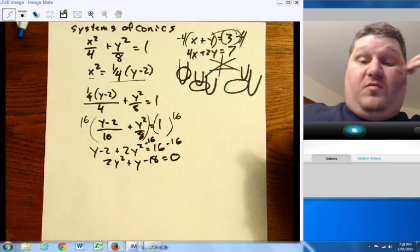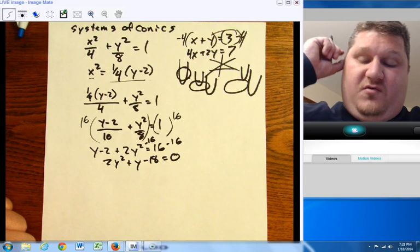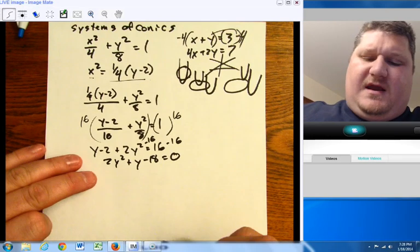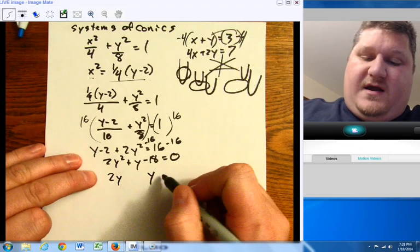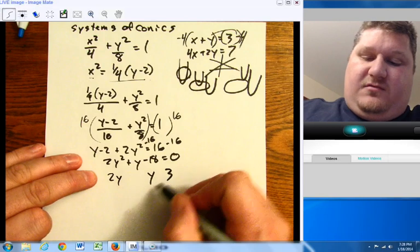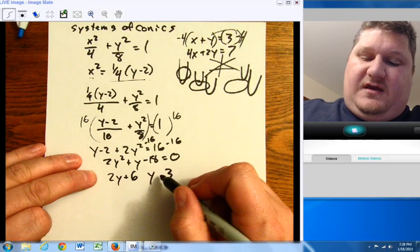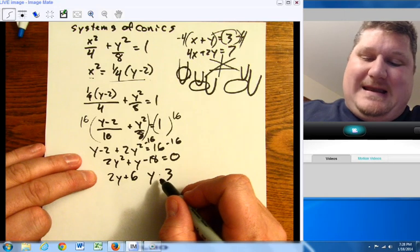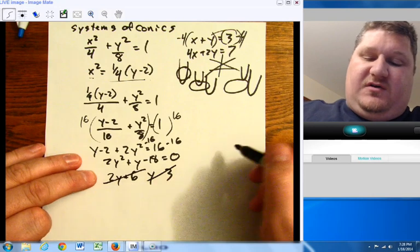Here, I'm going to come up with y minus two plus two y squared equals 16. Two y squared plus y, and move the 16 over, minus 18 equals zero. Now, if there's a good way to simplify this, then by all means. Otherwise, you might have to use the quadratic formula. Let's see here. Two y and y and three and six and plus and minus. Nope, that won't work. If we go two and nine, that won't work. Nope, we're going to have to go to the quadratic formula.